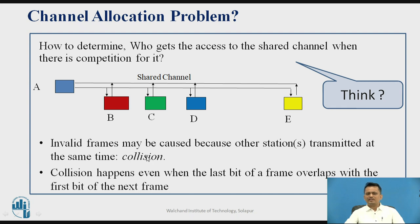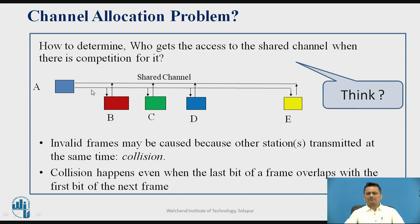The reason for generation of these invalid frames is called collision. Collision happens because other stations transmitted at the same time when one station was already transmitting. When collision happens, you have to discard that particular frame. If more than one node simultaneously tries to send data on the same shared channel, collision will occur, those frames must be discarded, and the receiver will ask for retransmission.